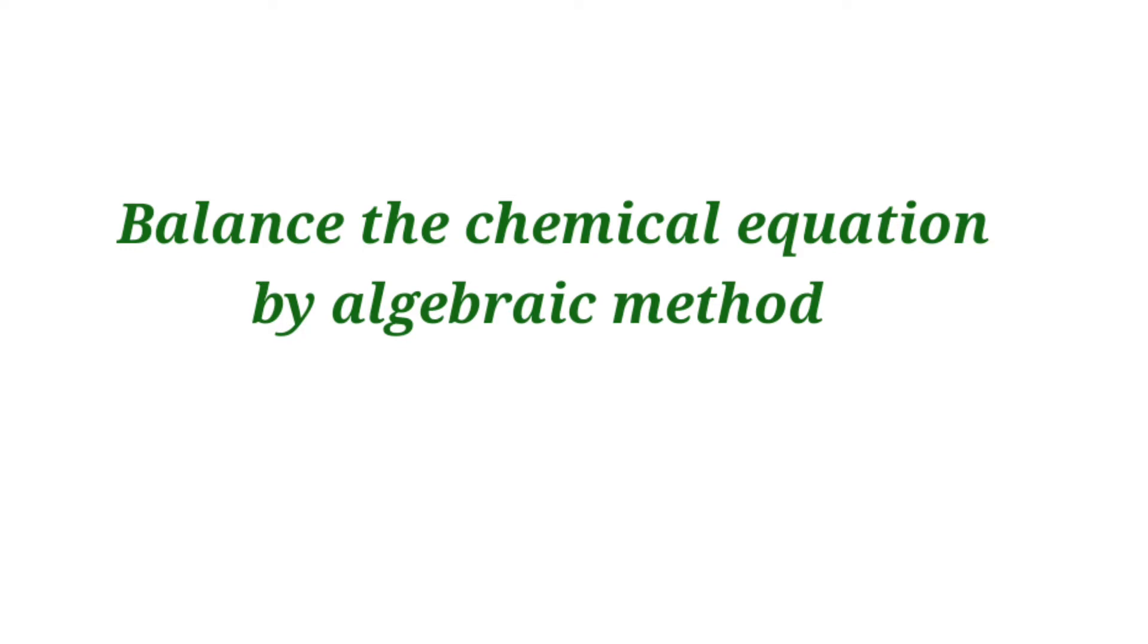Balance the chemical equation by algebraic method. Potassium dichromate plus hydrogen chloride gives potassium chloride plus chromium trichloride plus chlorine plus water.